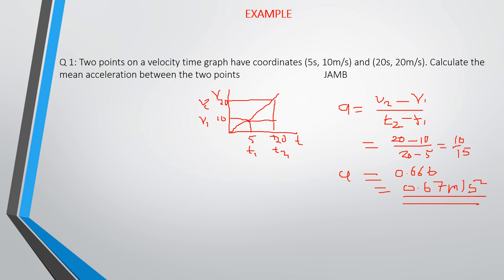For this particular case, 0.67 m/s² is the mean acceleration for this velocity-time graph. Please take note of how to solve problems on velocity-time graphs. Know that the slope of the velocity-time graph gives you acceleration, and that is what we have done using the slope of the graph.